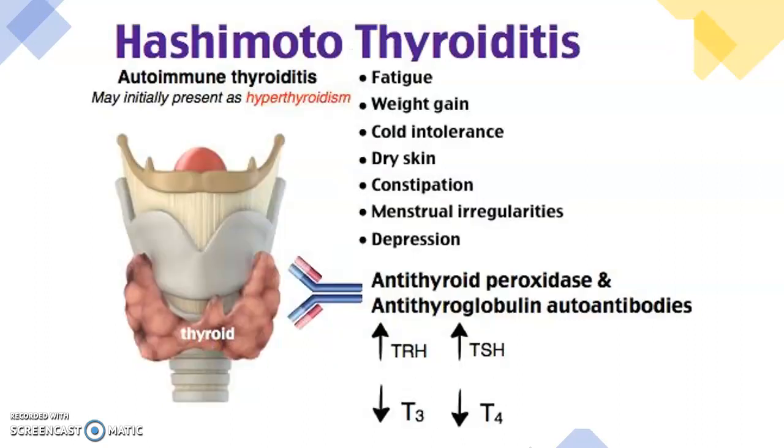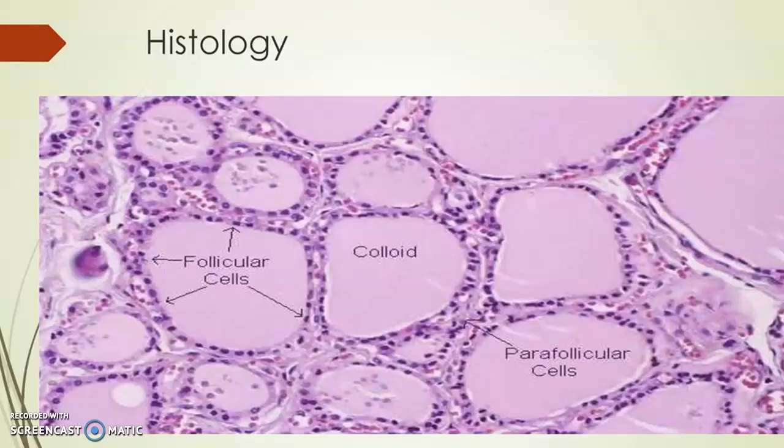Another thing you can get is goiter. If you look at histology — the actual cells of the thyroid gland — follicular cells make colloid, and when they're stimulated by thyroid stimulating hormone they make more colloid. You get expansion of these follicles, which leads to goiter — an enlarged thyroid gland.